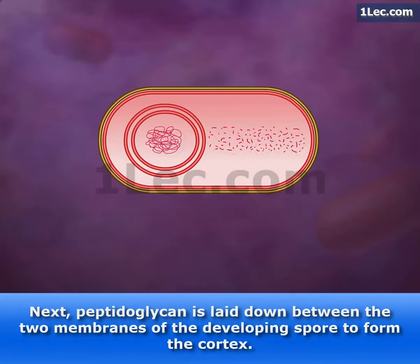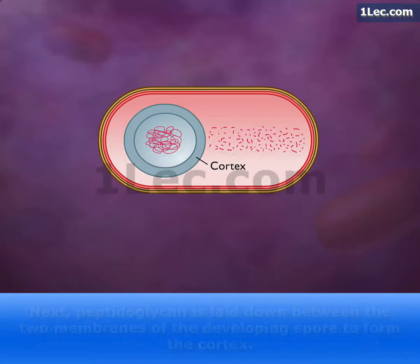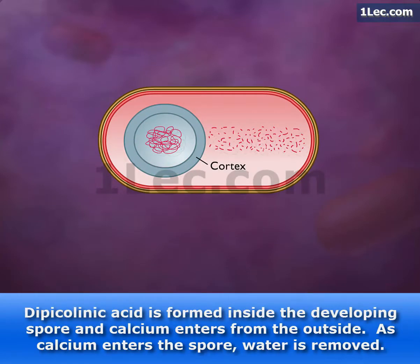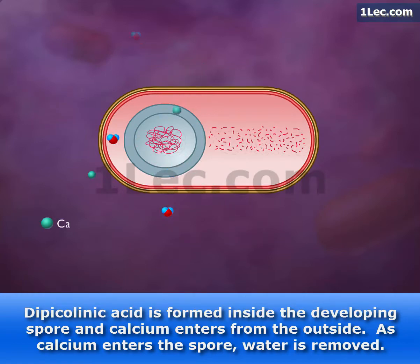Next, peptidoglycan is laid down between the two membranes of the developing spore to form the cortex. Dipicolinic acid is formed inside the developing spore and calcium enters from the outside. As calcium enters the spore, water is removed.